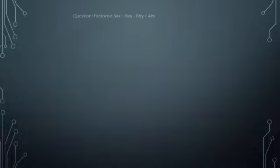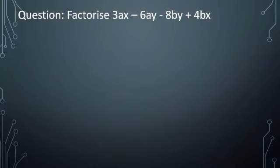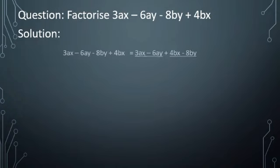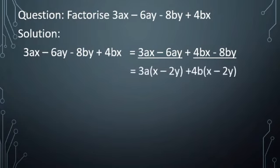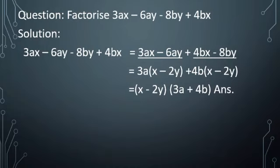Factorize 3ax − 6ay − 8by + 4bx. After rearranging, we get 3ax − 6ay + 4bx − 8by. We make the groups (3ax − 6ay) and (4bx − 8by). In the first group, 3a is the common factor. In the second group, 4b is the common factor. In both groups we get (x − 2y) inside the bracket, so the factorization is (x − 2y)(3a + 4b).